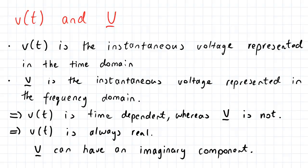And as a result of these time domains and frequency domains, V of t is always real, however our V vector can have an imaginary component. This is also applicable for our current, so we can replace the V of t with I of t. I of t will be the instantaneous current represented in the time domain, and I vector is the instantaneous voltage represented in the frequency domain.